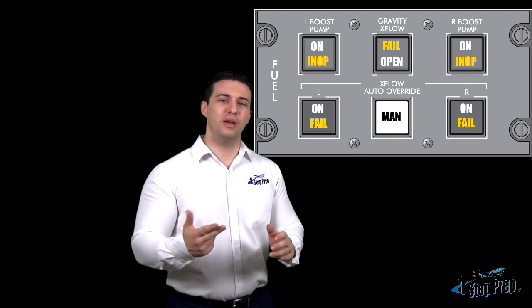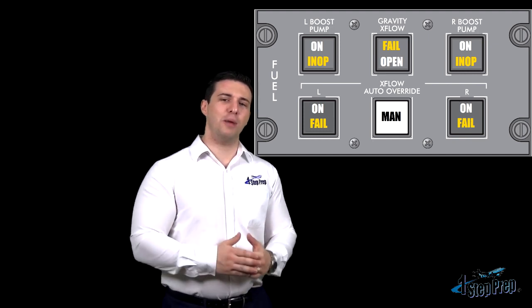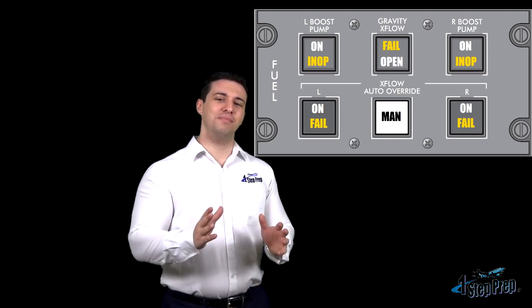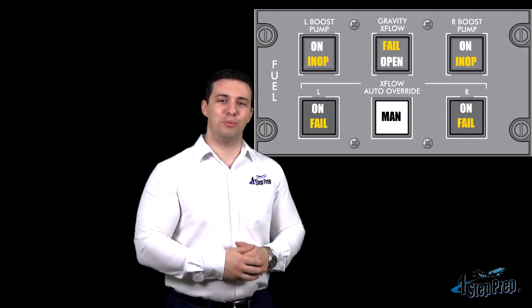How does the aircraft know the pump is inoperative? Low pressure. You have a pressure sensor there, so essentially that pressure sensor is not sensing pressure, indicating you have a low pressure indication.